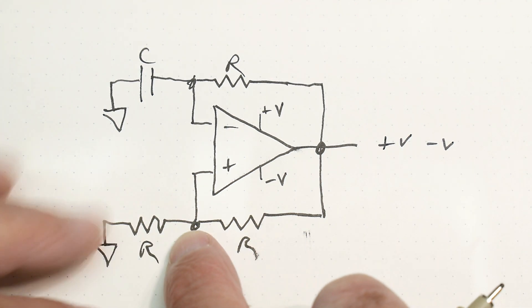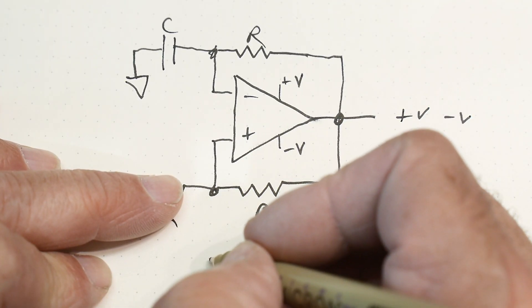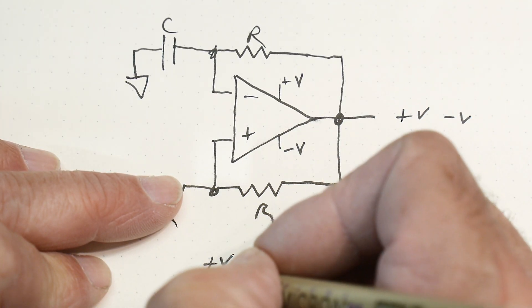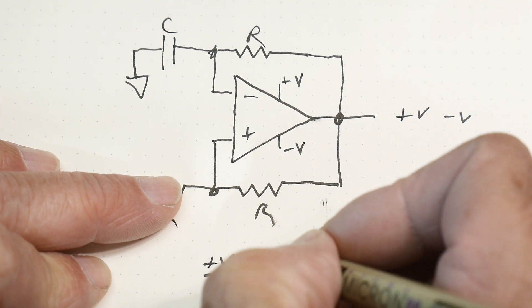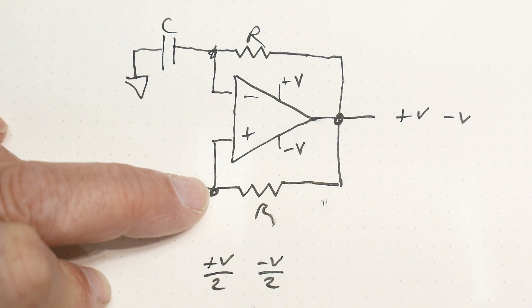And so what can this point be? Well, there's a resistive divider. So this point here can be plus V over 2 or minus V over 2. That's the range that this can be.